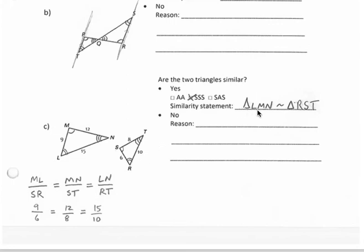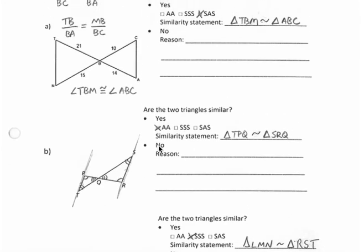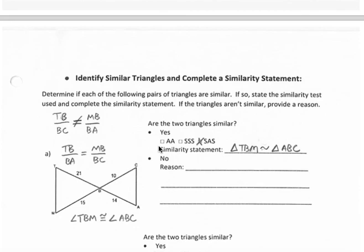And we can name our corresponding parts in our similarity statement. So if I name my first triangle LMN, then I must correspond and name my next triangle with RST. All right, so there's some examples using those three similarity tests. Just be able to recognize them, and if they are similar, be able to complete a similarity statement. Thanks.